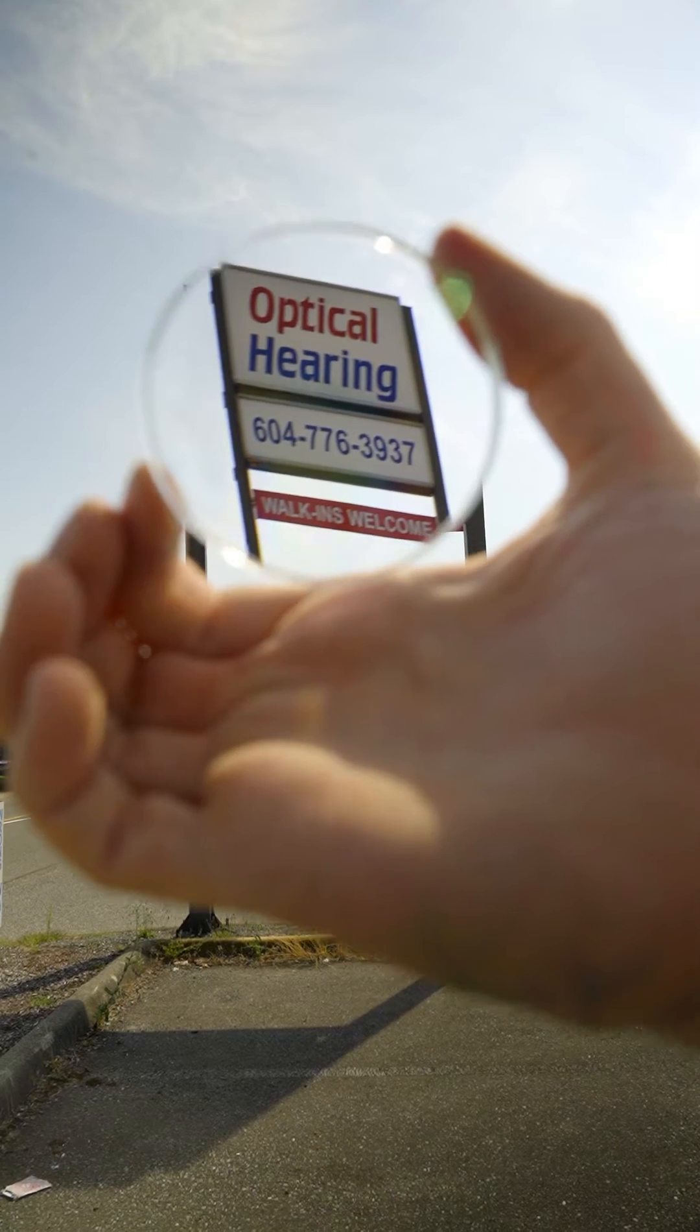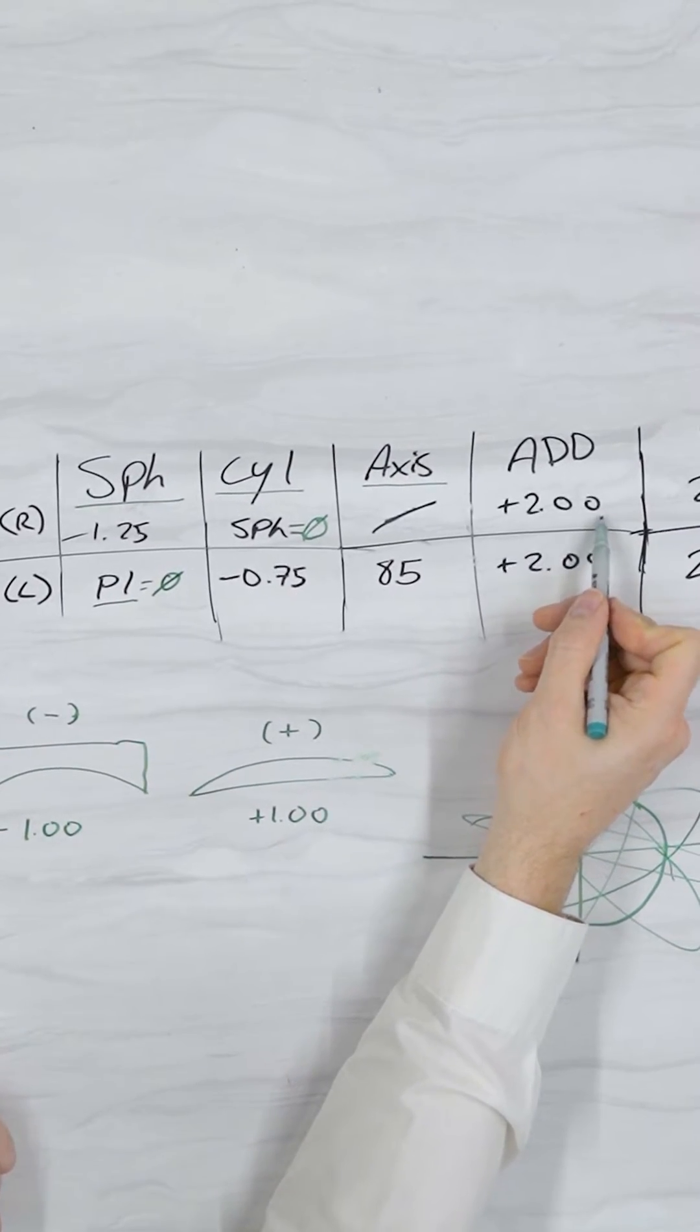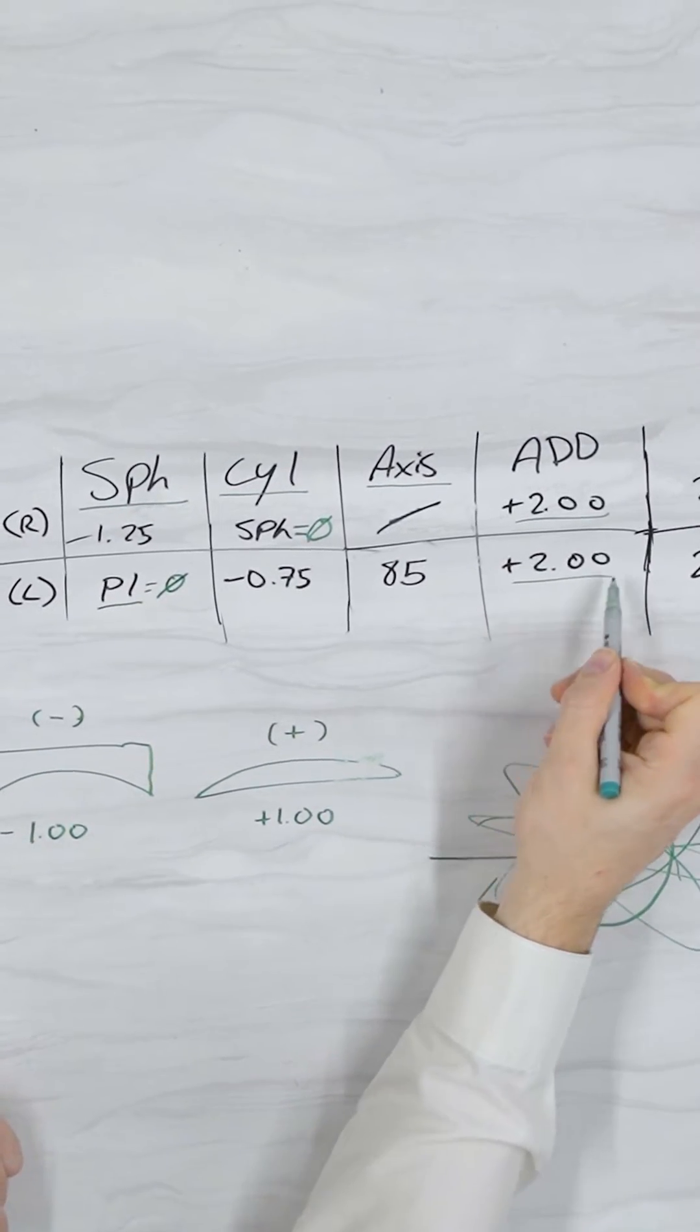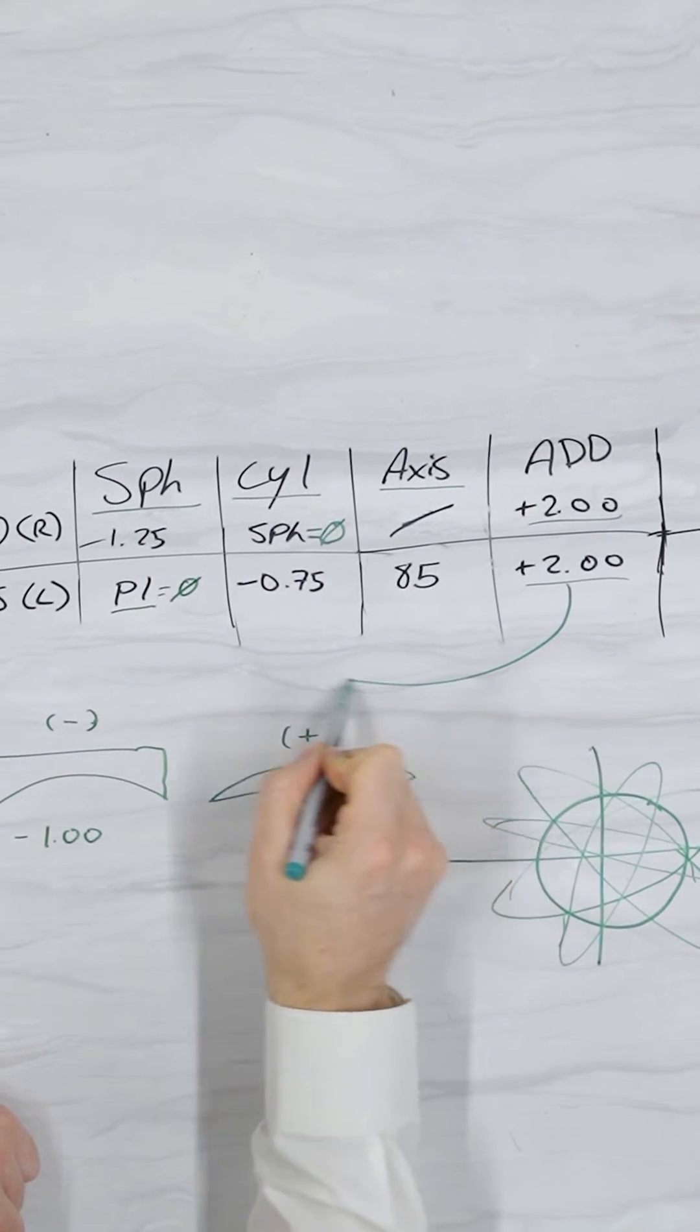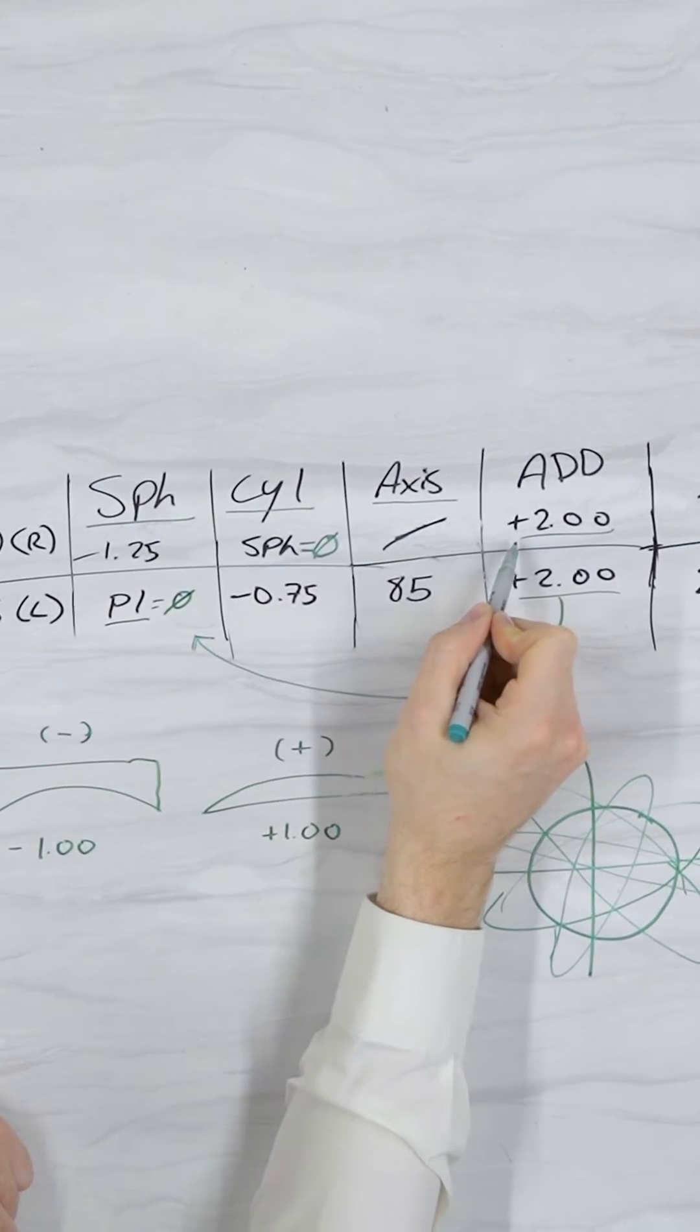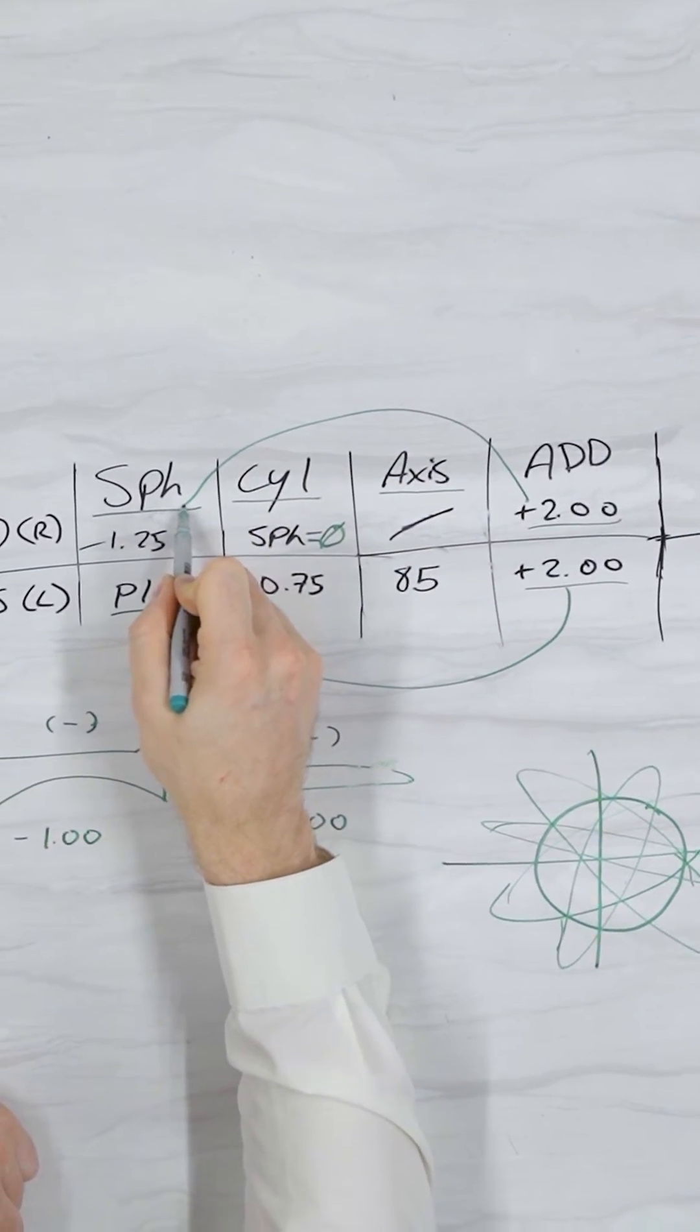The last thing that we'll talk about in this video is the ADD component. This is another depth control component but specifically for six feet in. In the prescription, it's applied by adding it to the sphere in the first column. This results in your reading prescription.